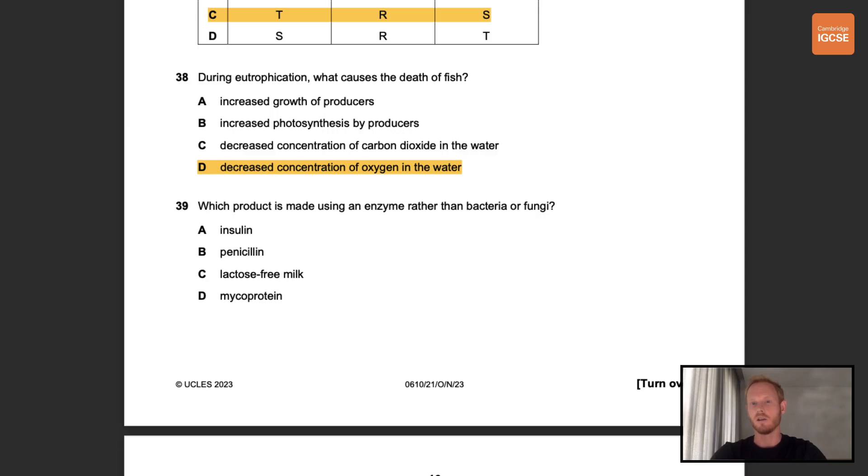Number 39. Which product is made using an enzyme rather than bacteria or fungi? So insulin is made using bacteria, penicillin and mycoprotein are both made from fungi, and lactose free milk is made using the enzyme lactase. So the correct answer is C.